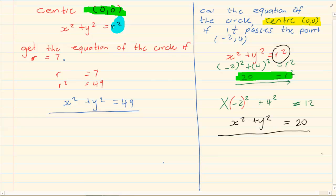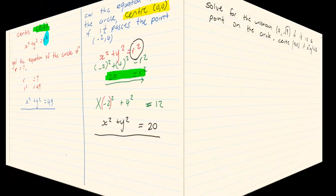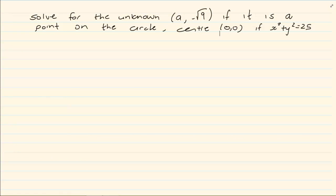Now sometimes when they give you these, these are easy basic questions that you would find in your analytical geometry. But this is more what we are looking at. Solve for the unknown (a, -√9) if it is a point on the circle center (0,0) if x squared plus y squared is equal to 25. Now what are they doing?